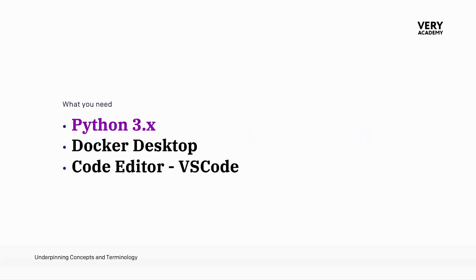Before we start the project, just to remind you that you are going to need Python installed. You don't need to install the version I'm using — I think it's 3.12 as of recording. You can utilize anything from 3.x upwards. It's up to you whether you want to install Docker straight away or install it as and when we get to that part. And of course you're going to need a code editor. Throughout this whole project we're going to be utilizing Visual Studio Code, though it's completely up to you. If you are new to development in general, it's probably worth following along step by step using the same code editor.